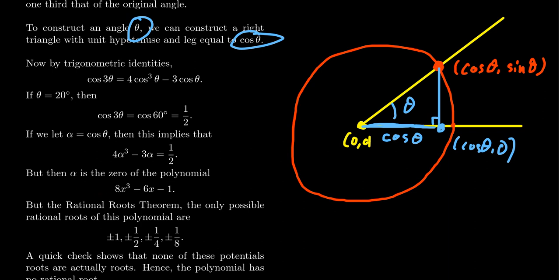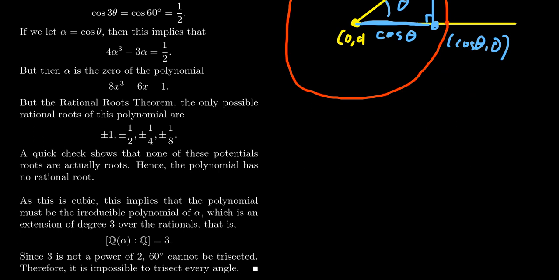This is a degree 3 polynomial. If it's irreducible, that happens if and only if it has no roots. Because if it's reducible, it has a linear factor. And if it has a linear factor, it has a root.